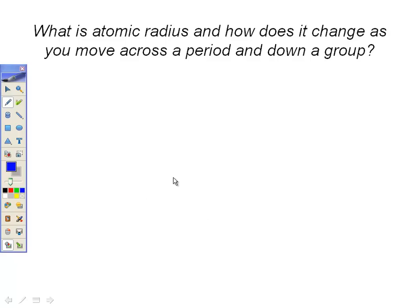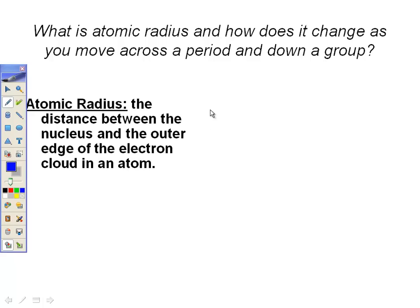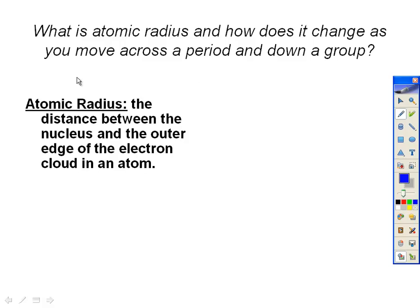Our first trend is atomic radius. We're going to define it first and then do the trend and talk about why it is the way it is. So atomic radius, by definition, is the distance between the nucleus and the outer edge of the electron cloud. It's essentially size. The bigger the radius, the bigger the size.